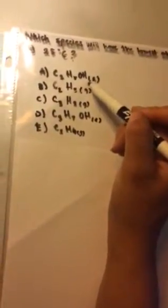Which species will have the lowest absolute entropy at 25 degrees Celsius? A: C2H5OH in liquid, B: C2H3 in gas, C: C3H8 in gas, D: C3H7OH in liquid, and E: C3H6 in gas.